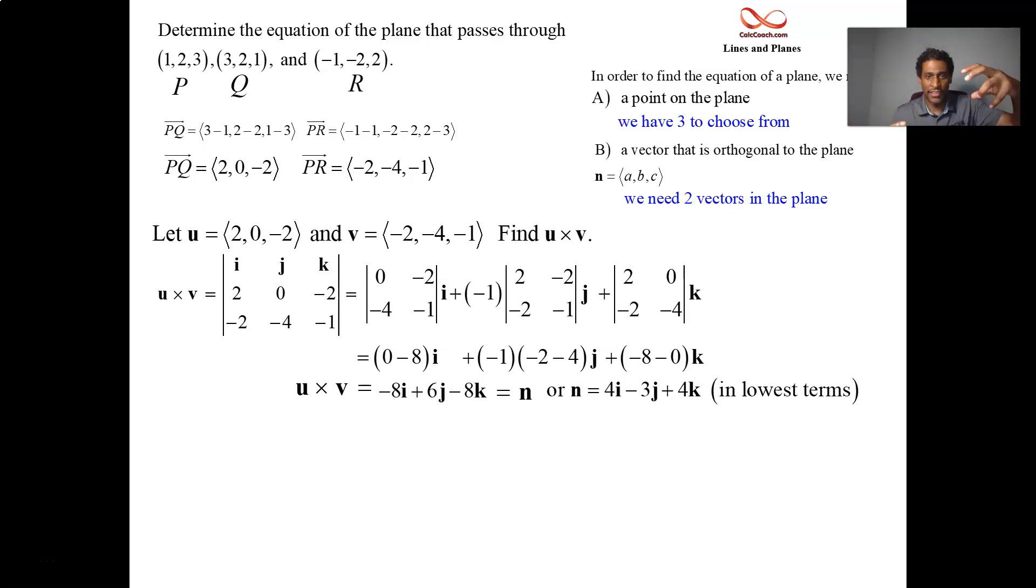Once you have these two things in hand, a point and a normal vector, you put them together the following way. As soon as you have the normal vector, you have three of the four parts for the equation of the plane, the AX, the BY, the CZ, you know A, B, and C. The only thing you're missing is D. The way you get D is by plugging the point into that equation.